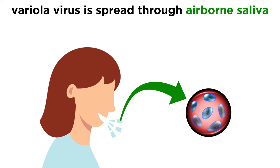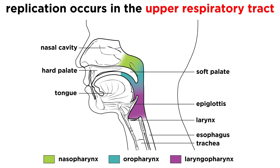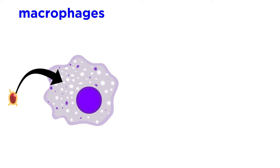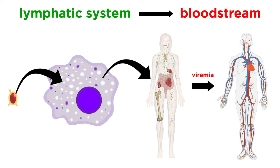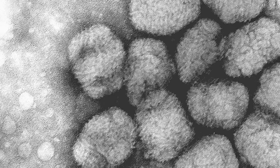Variola virus is spread from person to person through airborne droplets of saliva from an infected person. After being inhaled, the variola virus replicates in the upper respiratory tract without causing any symptoms or contagion. The virus then infects immune system cells called macrophages, which bring the virus into the lymphatic system, which then carries the virus to lymph nodes. The virus then replicates and initiates viremia, which spreads the virus through the bloodstream into the liver, spleen, and other organs.